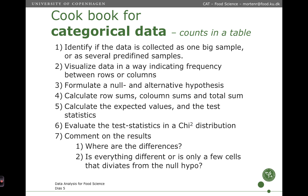The cookbook for categorical data or counts in a table is: first, identify if the data is collected as one big sample or as several predefined samples. Visualize data in a way indicating frequencies between rows or columns. Then formulate a null and alternative hypothesis — all these steps are covered in another video. Then calculate a test statistic and a p-value by first calculating the row sums, the column sums, and the total sum. Then calculate the expected values and the test statistic, and take that into a chi-square distribution to get a p-value. Based on the p-value and visualization, comment on the results: where are the differences, or is it only a few cells that deviate from the null hypothesis?